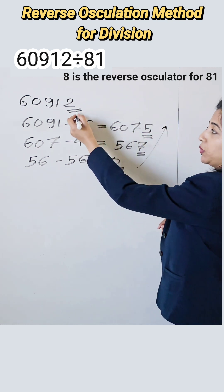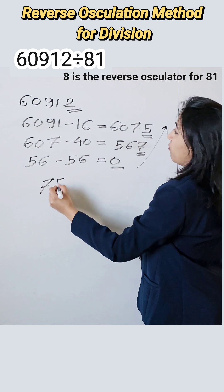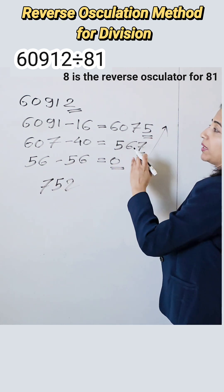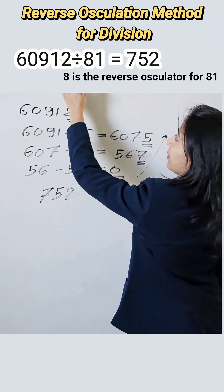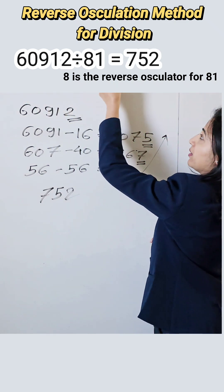And if we write this number in a reverse order including our original number, so 752. So if we write the number in the reverse order, last number in the reverse order, then it is nothing but a quotient. So that means if we divide this number by 81, the quotient becomes 752.